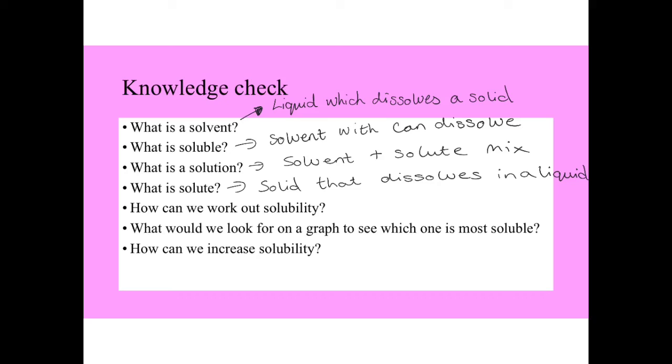How can we work out solubility? So 100 centimeters cubed of water. Add until no more dissolves. Put it in, well, weigh an evaporating basin. Then put it in the evaporating basin.